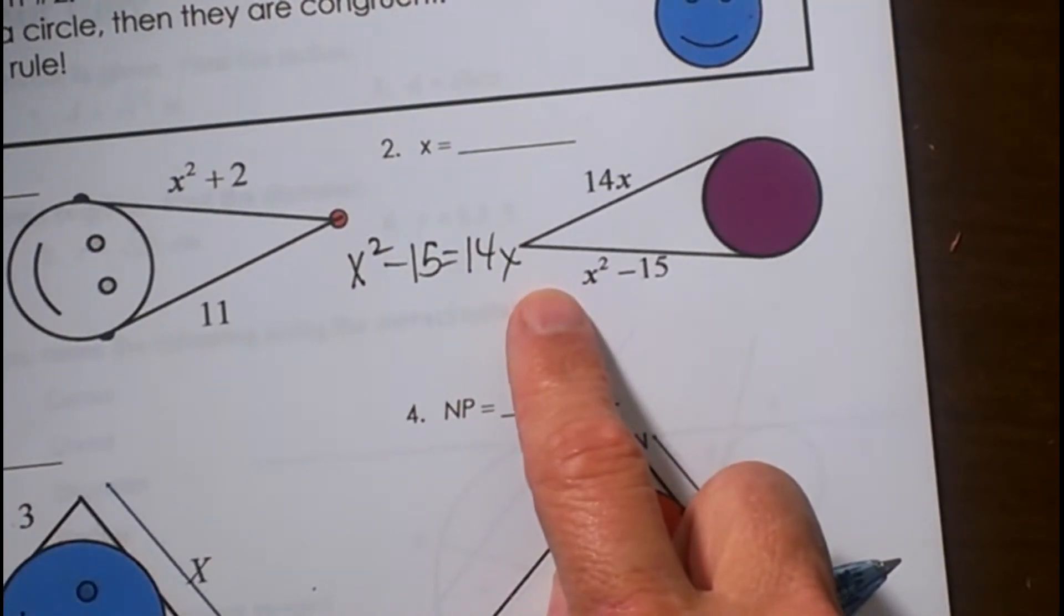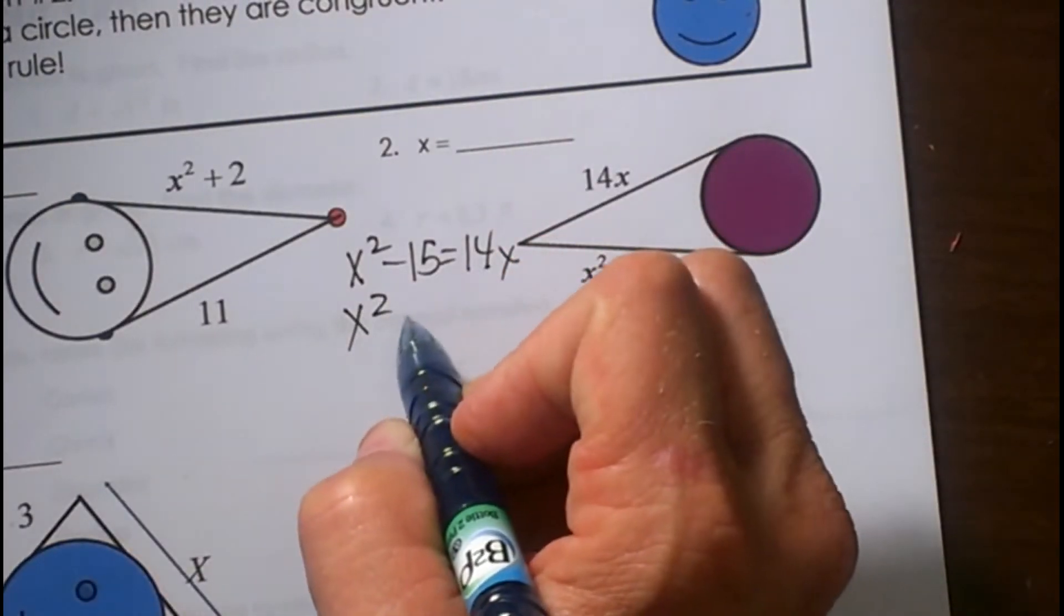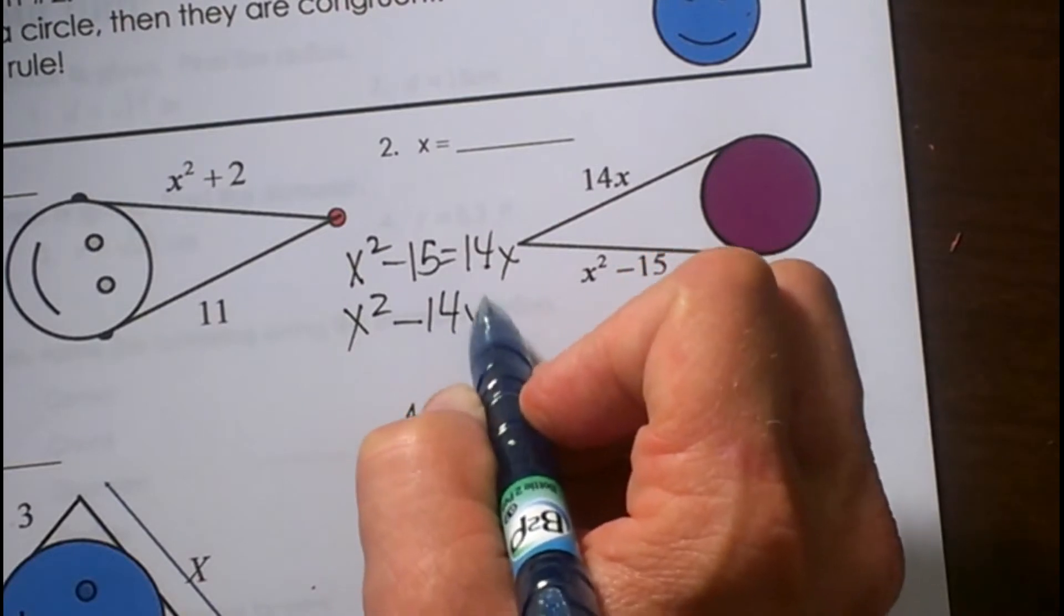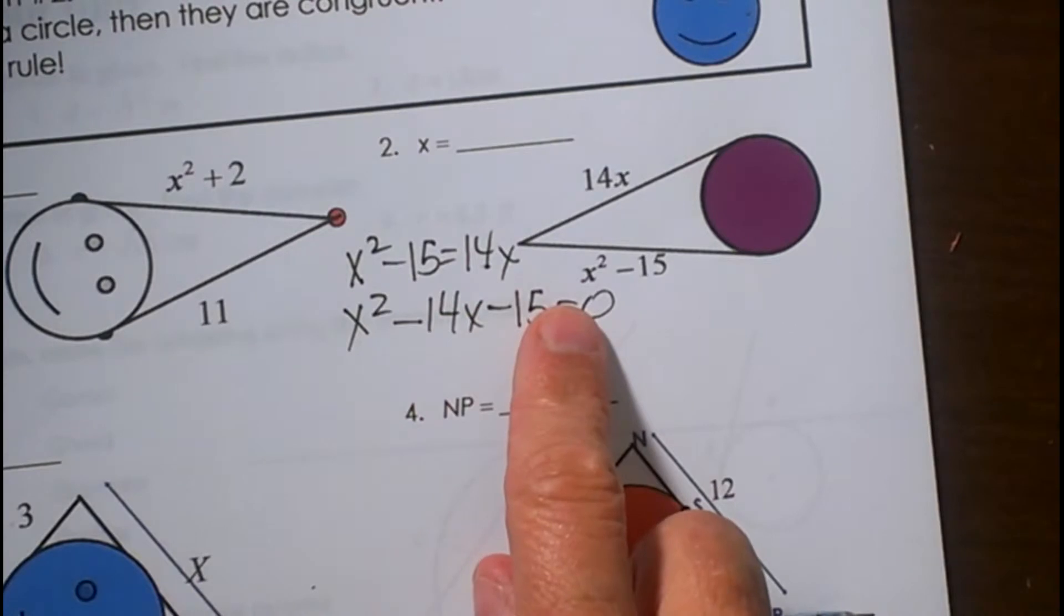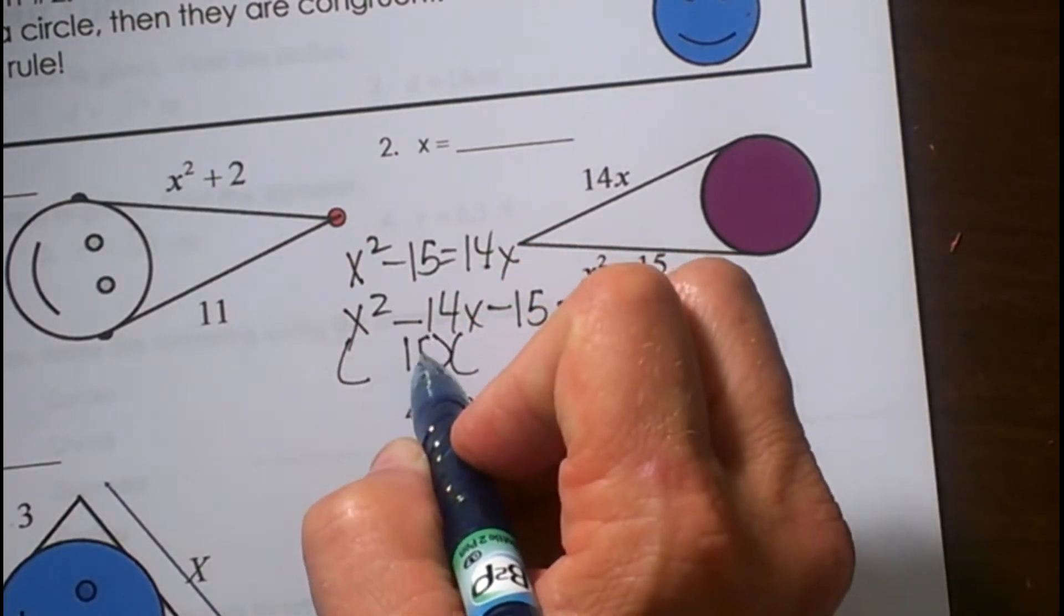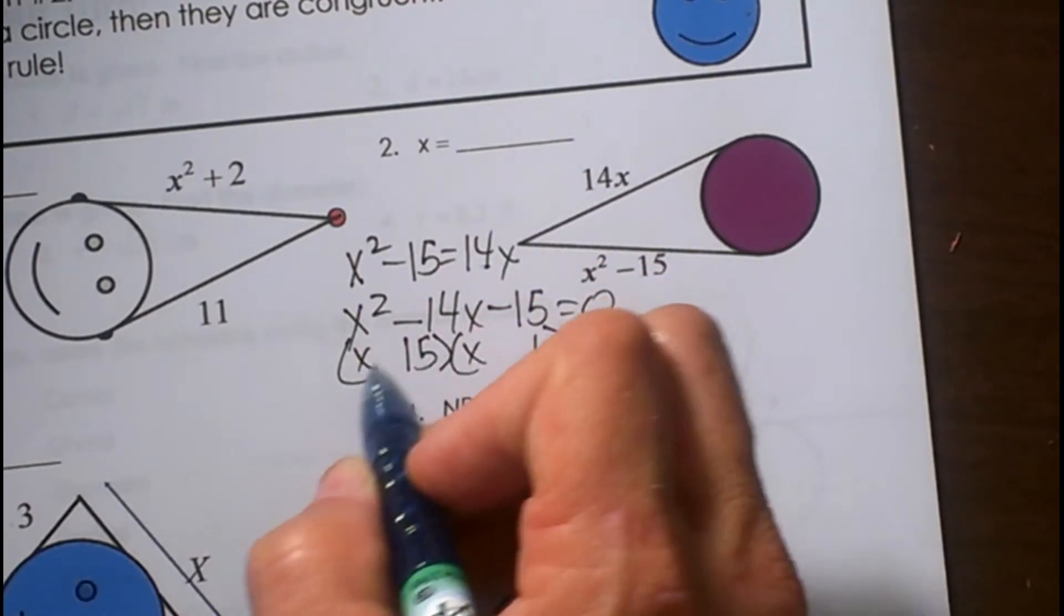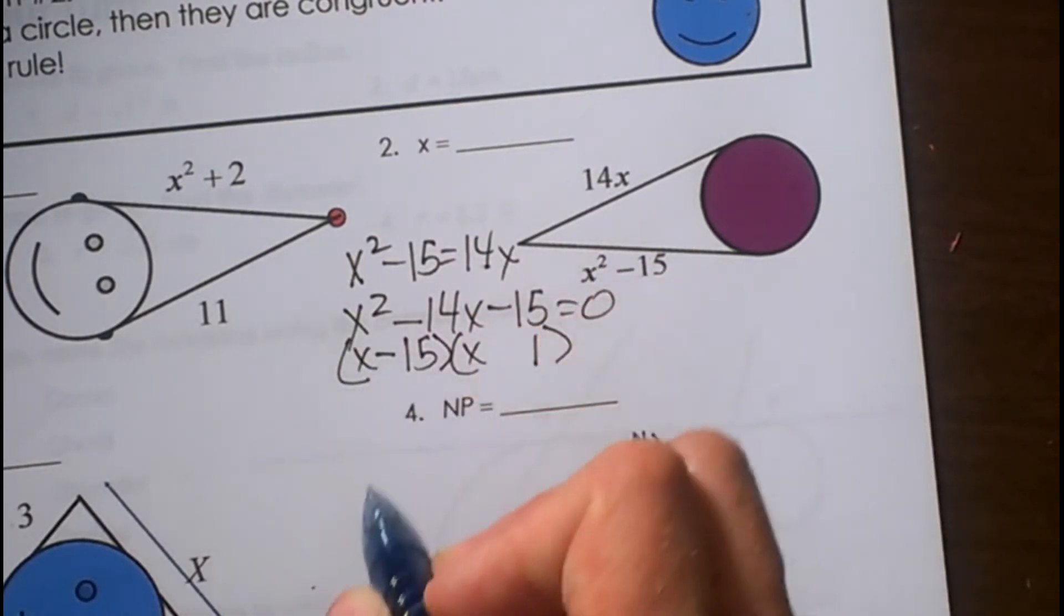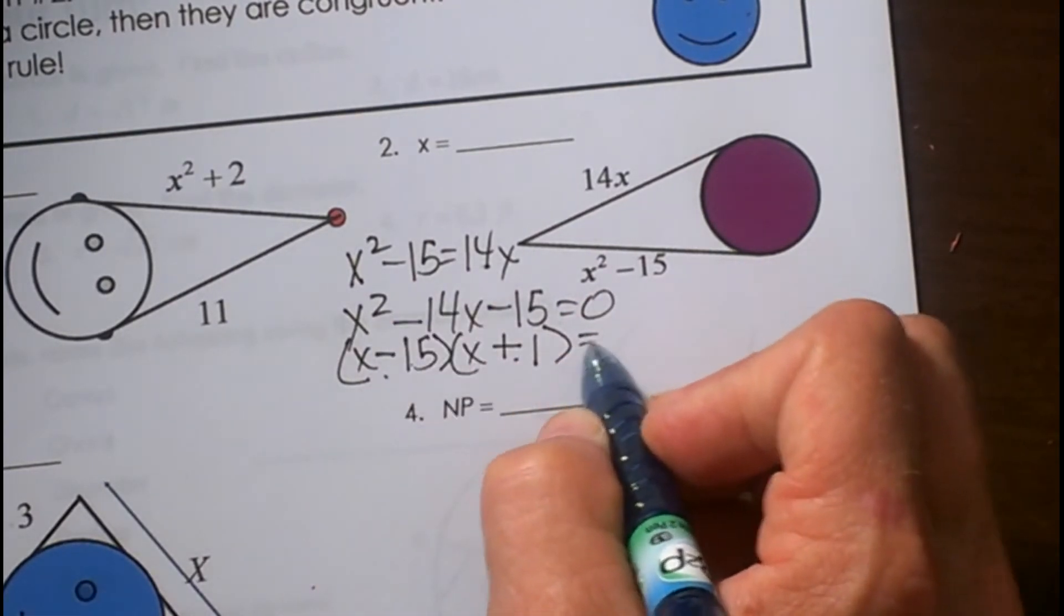Now this is a quadratic, so I'm going to have to get everything on the same side, descending order. So I'm going to move the 14 over, make it a negative 14, and bring my negative 15 to the back to get it in descending order. Now I can try to factor it. So what multiplies to 15 that has a difference of 14, and we know that those have to be 15 times 1, and we have to factor it into the two binomials. So let's see,